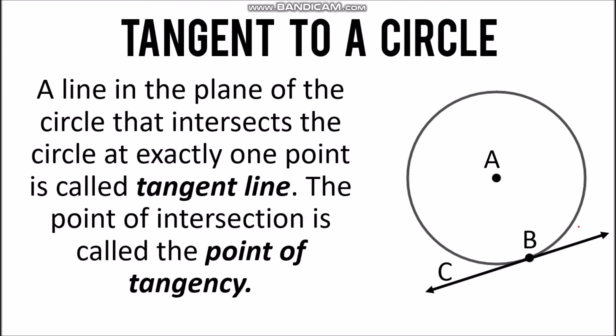A line in a plane of the circle that intersects the circle at exactly one point is called a tangent line. The point of intersection is called the point of tangency.